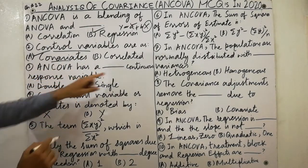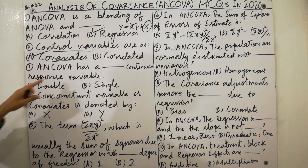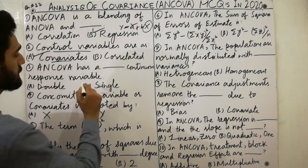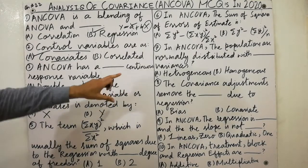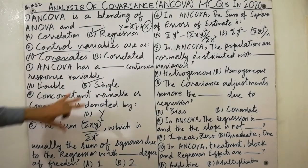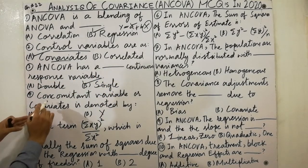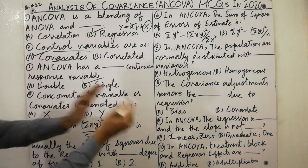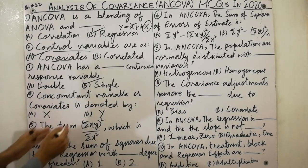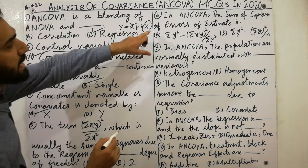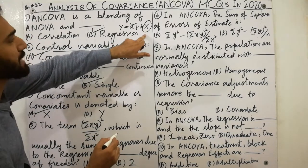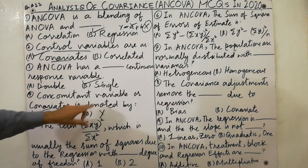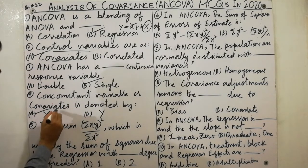ANCOVA always has a single continuous response variable — very important. The concomitant variable, which is also called a covariate, is denoted by X. The X variable is called the concomitant variable and covariate. Must remember.